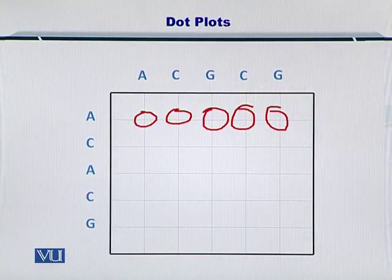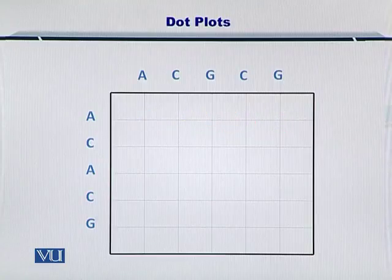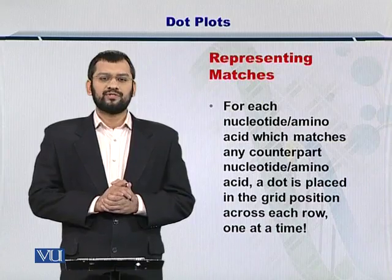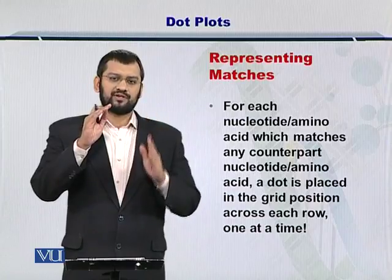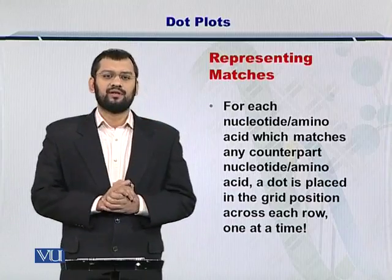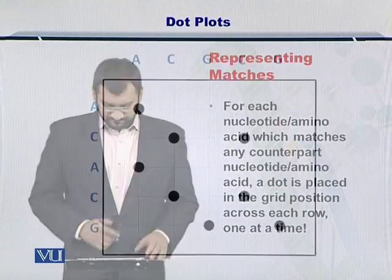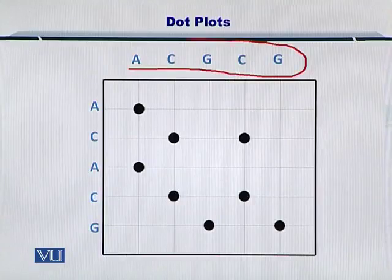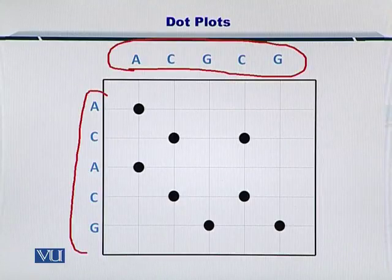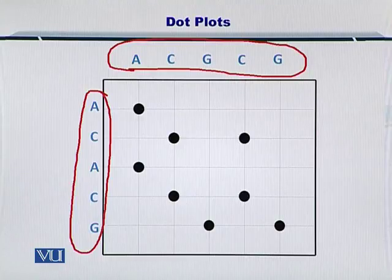Now, to start with this, you need to find out which nucleotide matches with which other nucleotide written on the left side of the matrix. So, this was your first sequence and this was your second sequence. In this case, it's the nucleotide — probably two RNA or DNA sequences.